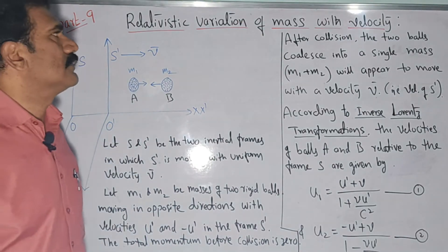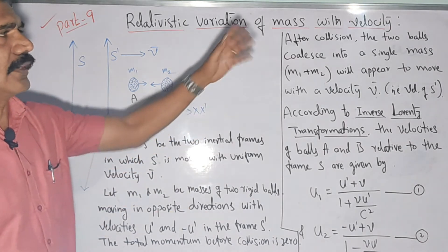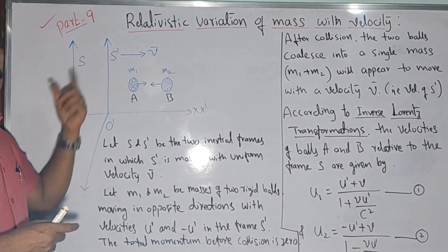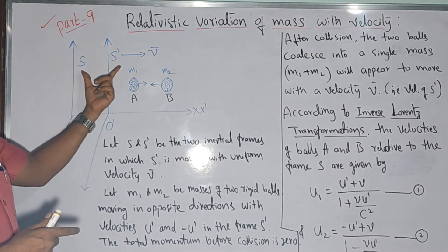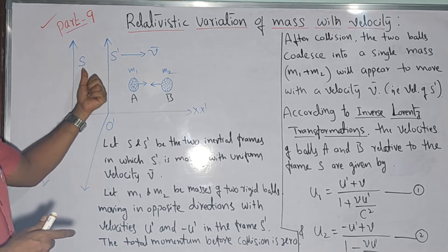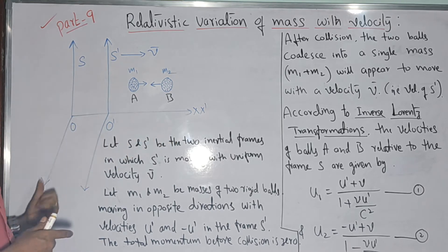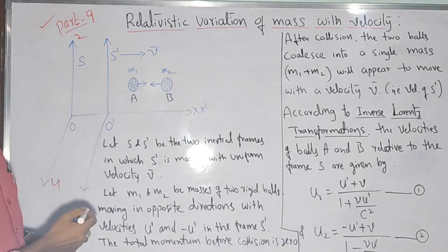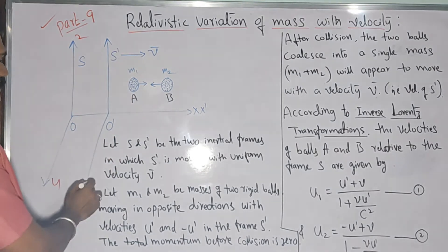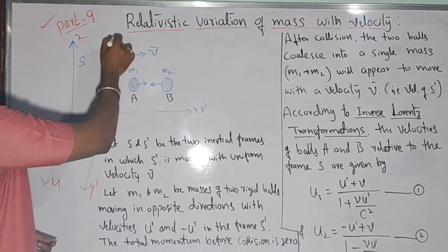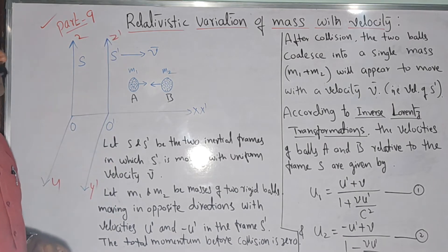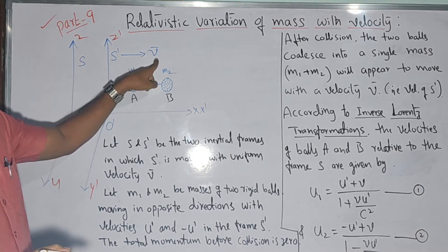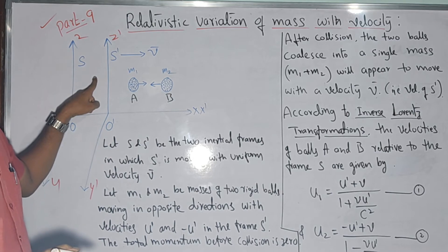We can prove that mass of a body is not an absolute quantity; it is a variant quantity — that is why it is called relativistic mass. To prove the relativistic variation of mass, as usual we consider two frames of reference. S is the fixed frame of reference with rectangular axes X, Y, Z. S' is the moving frame of reference with axes X', Y', Z', moving uniformly with velocity V with respect to the frame S.